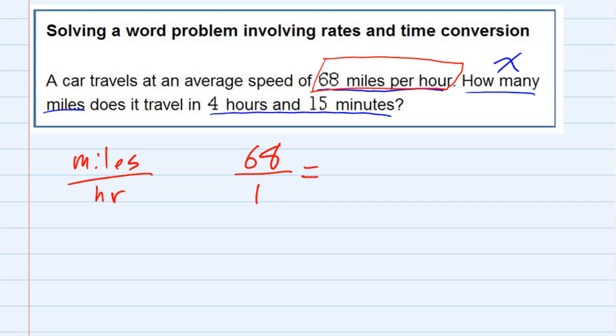And then on the other side of the proportion, I just have to also put miles on the top. And since we don't know miles, we were calling that X. And on the bottom, I put the time, how many hours. But we've got hours and we've got minutes.